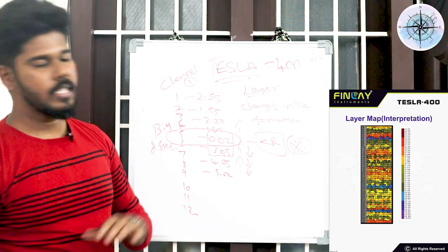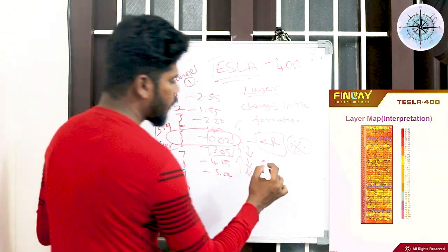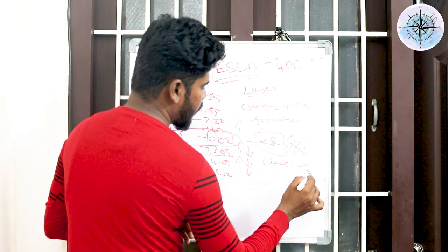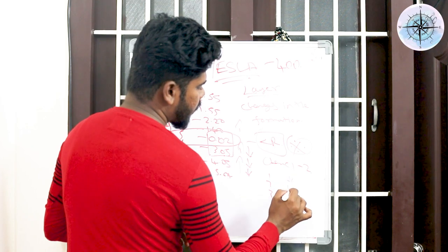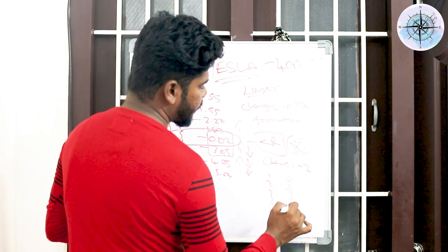This is for channel one, and again you are going to record the data for channel two. It is also going to calculate those values, and in those values the gradual changes you will be calculating.